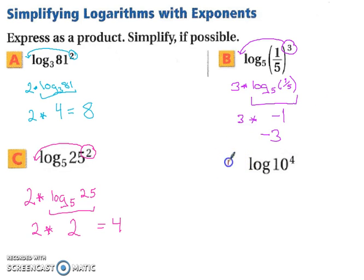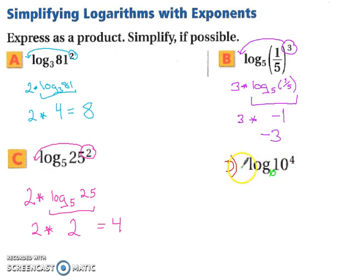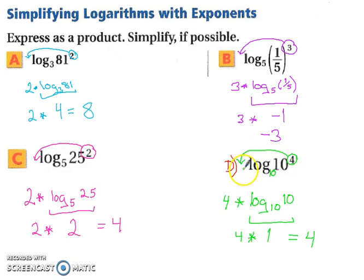For example D: whenever you don't see a base written, you assume the base is 10, because we have a base-10 number system. The 4 comes down in front, giving 4 times log base 10 of 10. Whenever the base is the same as the argument, the result is 1. So log base 10 of 10 is 1, and 4 times 1 equals 4.